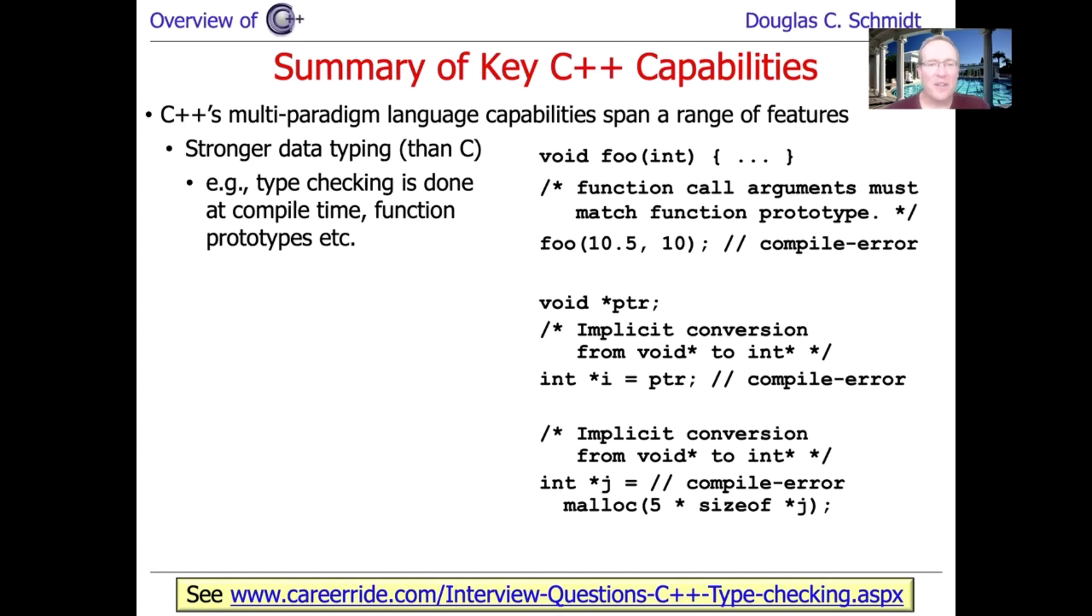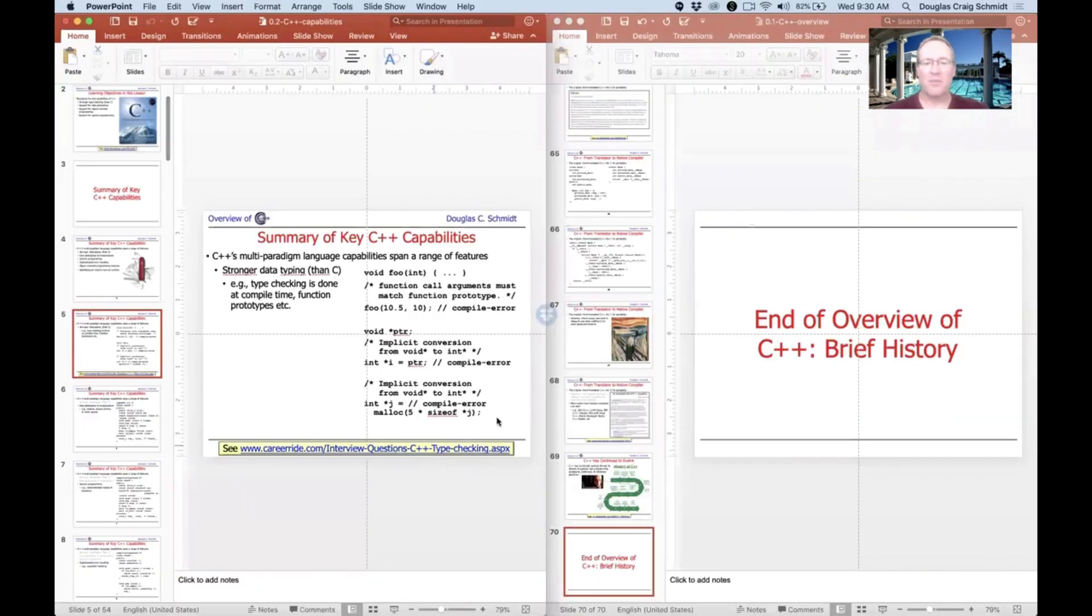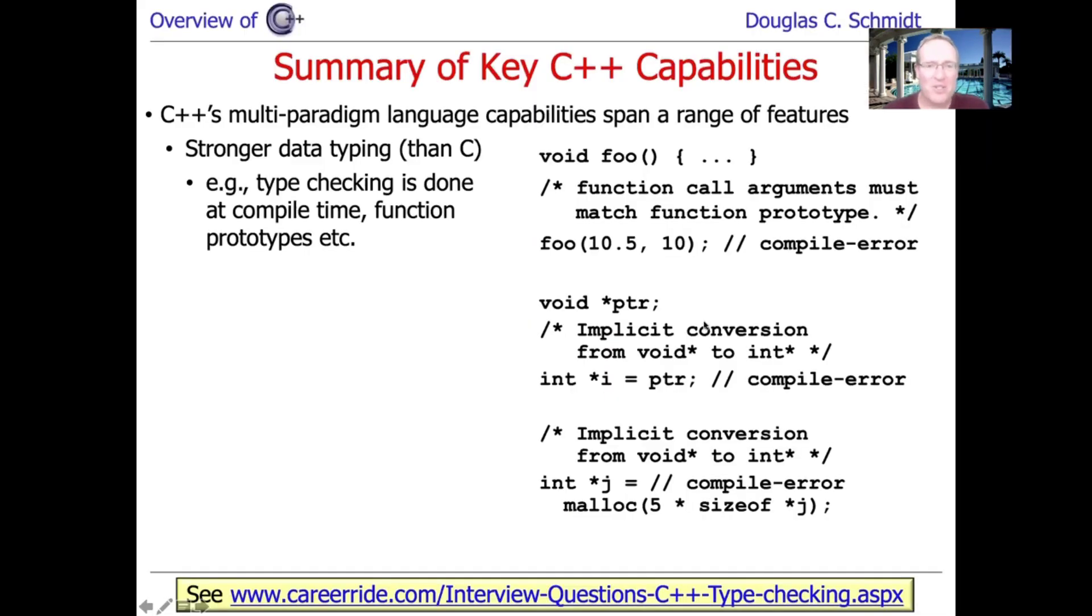But C had all kinds of weird quirks. For example, in C, you could define a function and you could leave out the type parameters, and then you could make calls. In fact, let me tweak this a little bit because it really should be like this. You could write C code like this, where you didn't give any parameters to the function declaration, and then you could call it with other parameters.